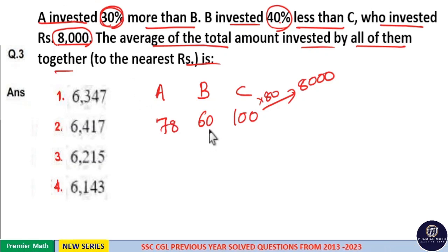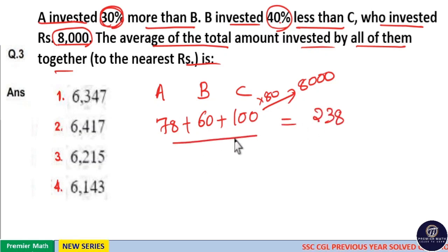Now average means 78 plus 60 is 138. 138 plus 100 is equal to 238. 238 by 3, there are 3 people. Now this is 238 part.